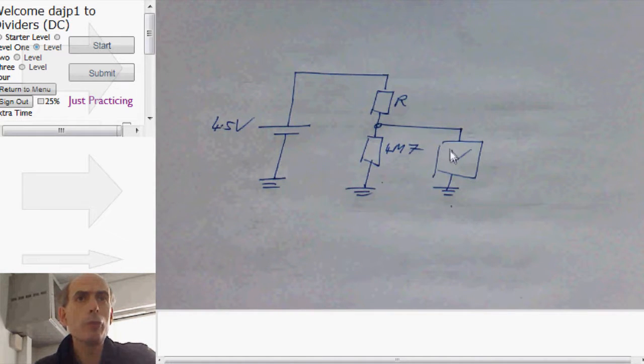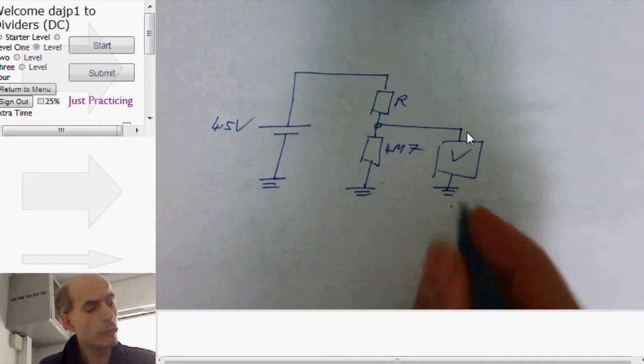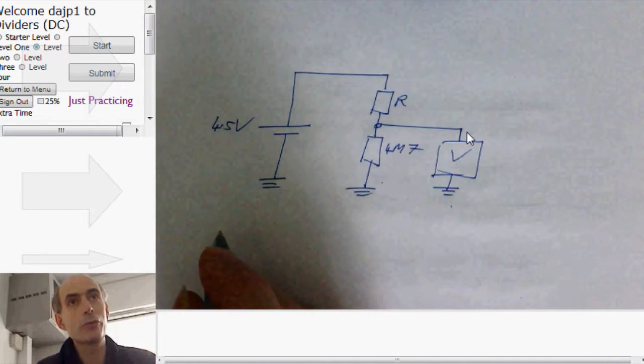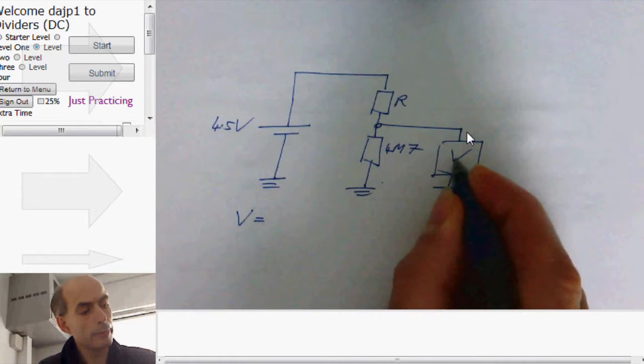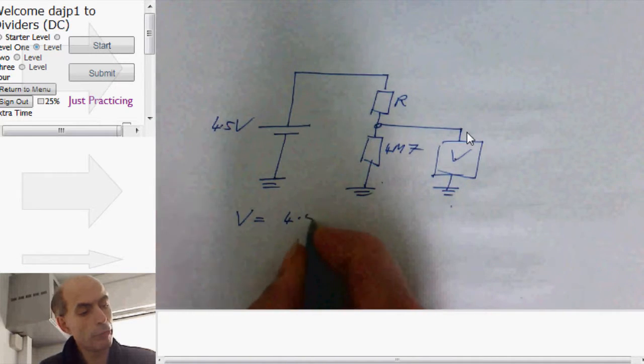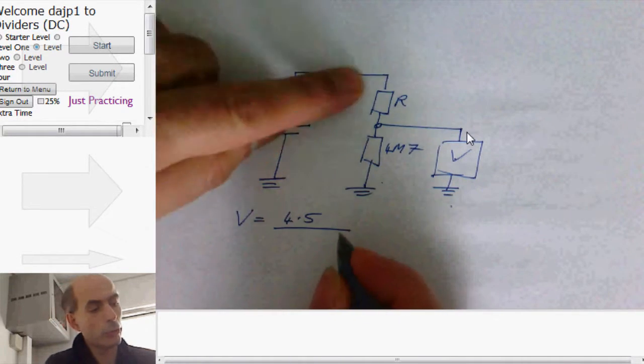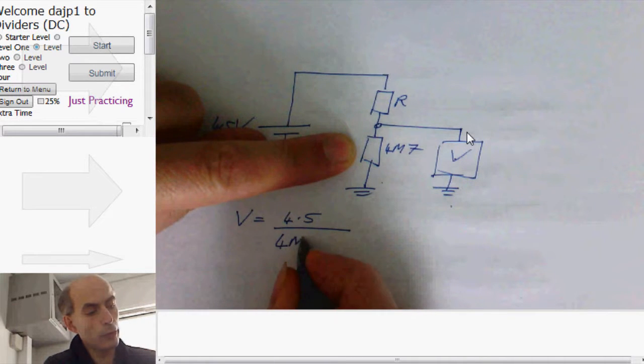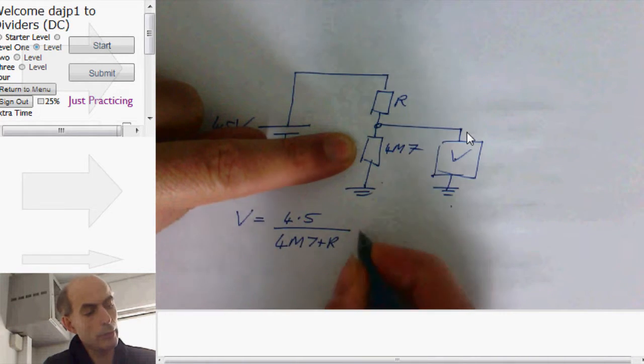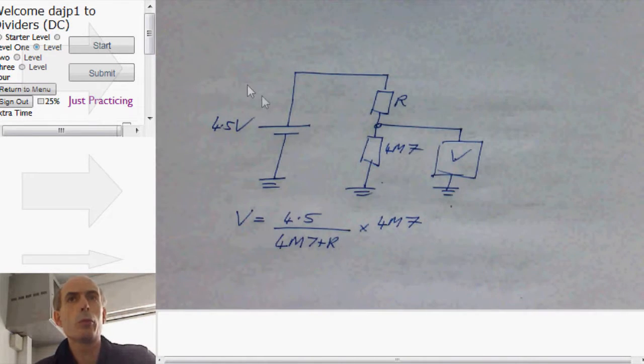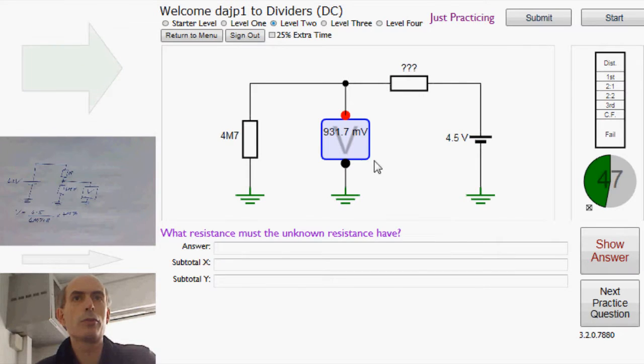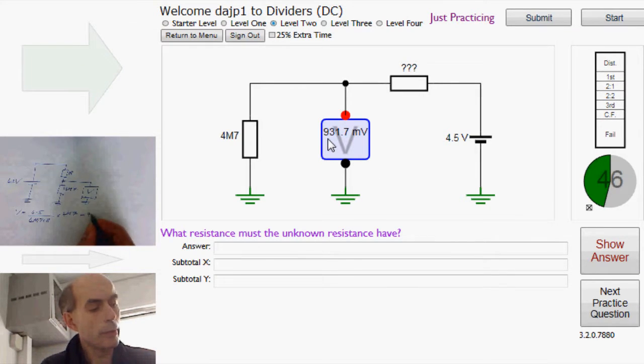It means that the voltmeter here is going to be reading using the standard potential divider equation. V here is going to be 4.5 volts divided by the total resistance, 4 meg 7 plus R, times 4 meg 7. And we know what the voltmeter reads, because we can see it's reading 931.7 millivolts.